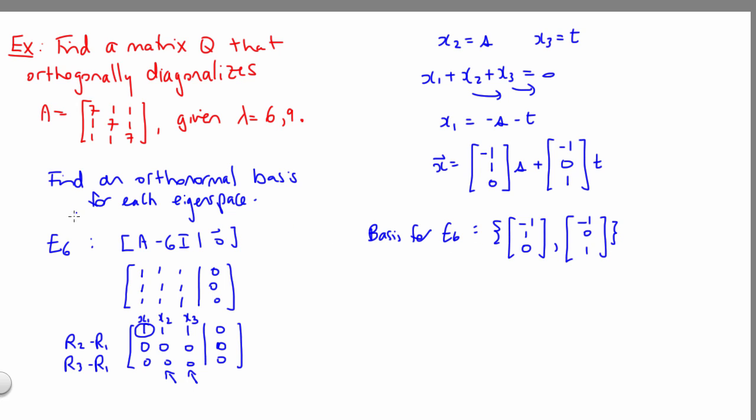But if we look back to the beginning of the problem, remember that what we're trying to do is find an orthonormal basis for each eigenspace. So what we need to do now is perform the Gram-Schmidt process on this set of vectors here, and that way we'll produce an orthonormal set, an orthonormal basis for this eigenspace.